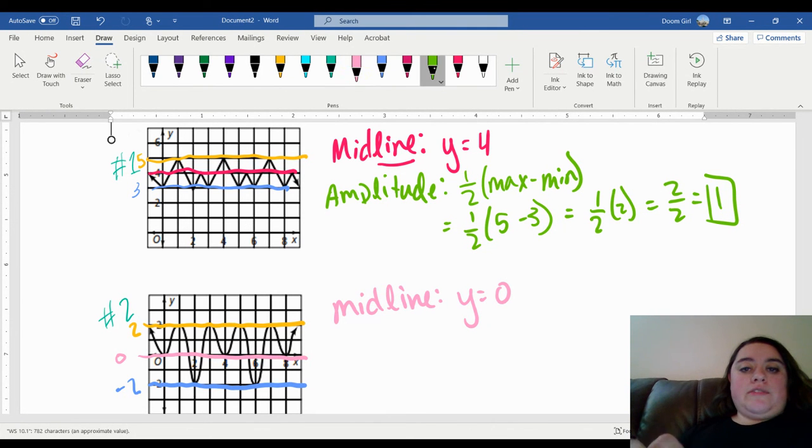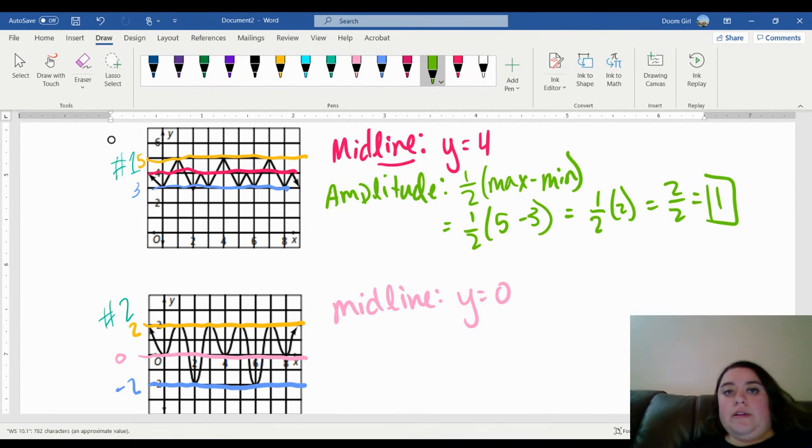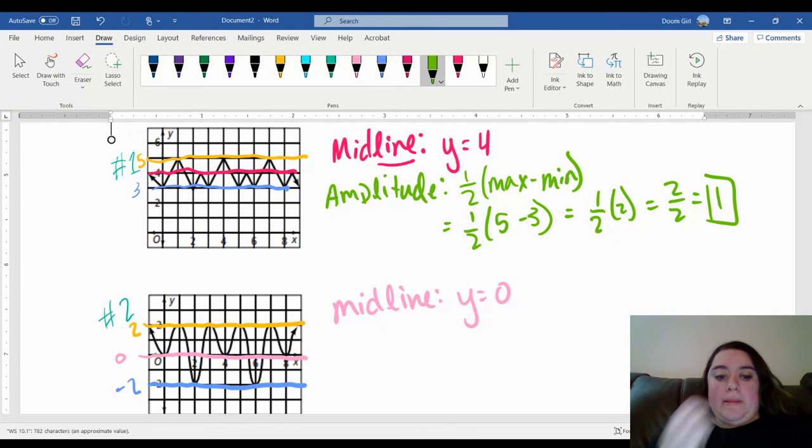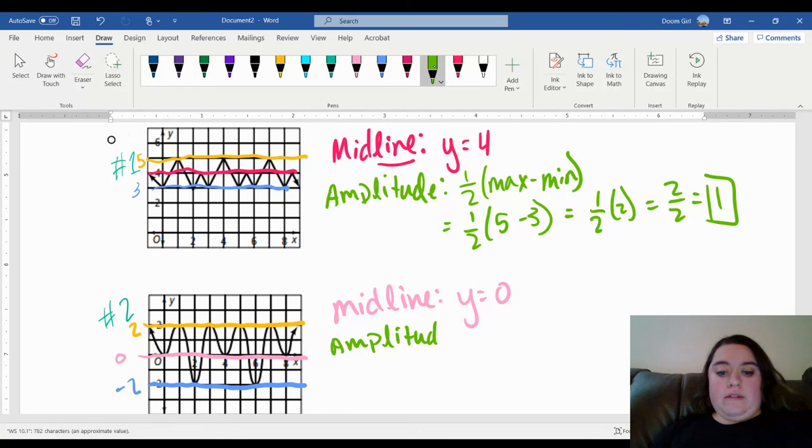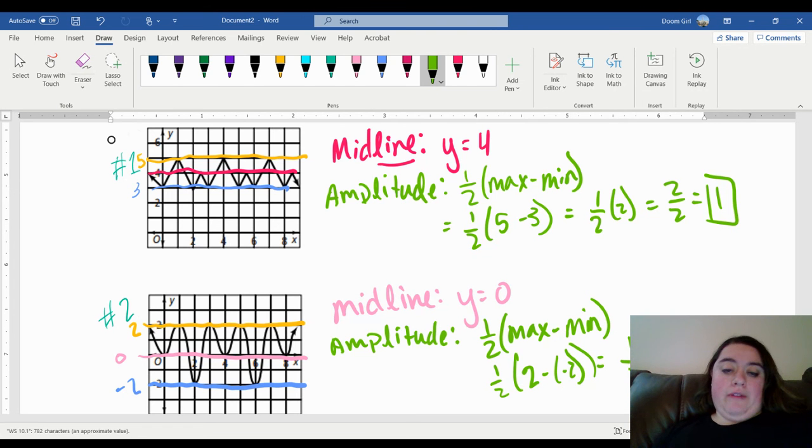Now let's find the amplitude. We have one half times the max minus the min, and one half times two minus a negative two. Well, two minus negative two, that's four. So one half of four is two. So that would be our amplitude.